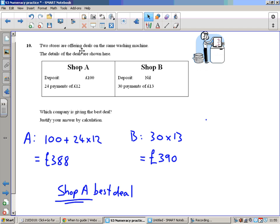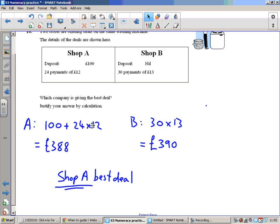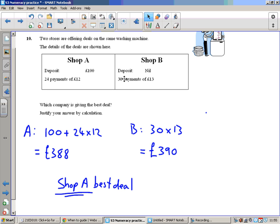Two stores are offering deals on the same washing machine. Shop A: you pay £100 upfront, that's what the deposit is, then pay £12 a month for 24 months, or 24 payments of £12. So £100 plus 24 twelves equals £388. Shop B: you're paying 30 payments of £13, so 30 lots of 13s, £390. So shop A has the best deal.